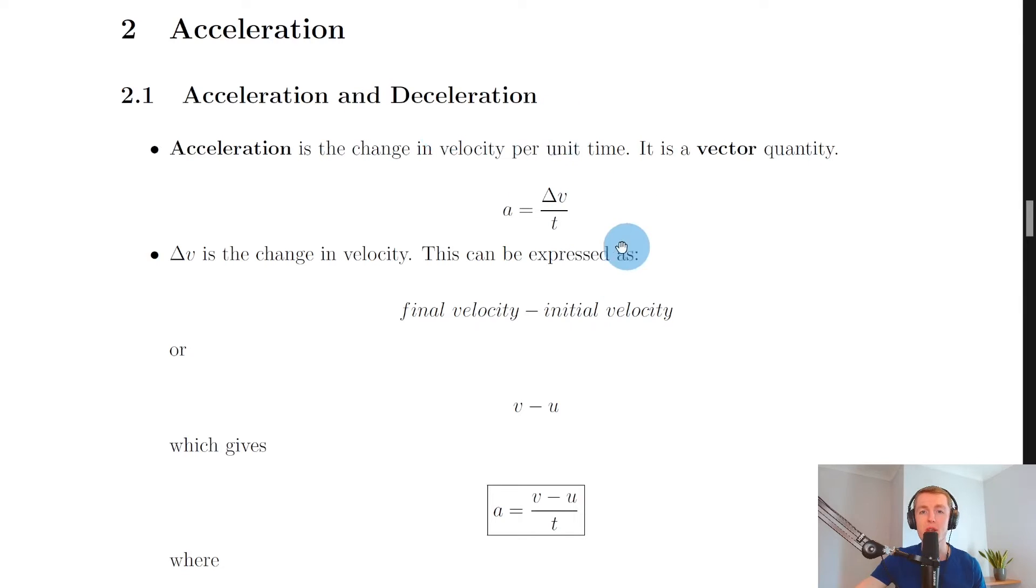And from this definition we can write the following in symbol form. So we've got a for acceleration is equal to the change in velocity delta v divided by the time t. So that is your change in velocity per unit time.